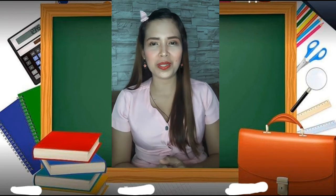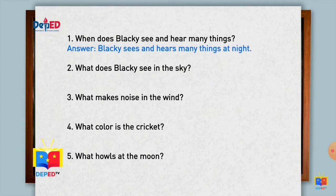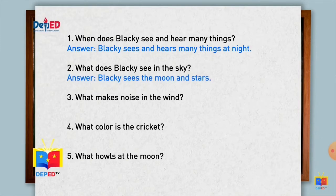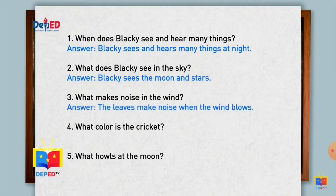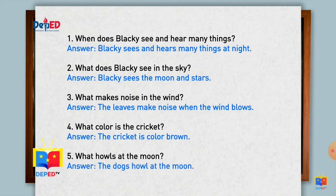Let's answer the following questions. Number one: When does Blackie see and hear many things? Blackie sees and hears many things at night. Number two: What does Blackie see in the sky? Blackie sees the moon and stars. Number three: What makes noise in the wind? The leaves make noise when the wind blows. Number four: What color is the cricket? The cricket is brown. Number five: What howls at the moon? The dogs howl at the moon.